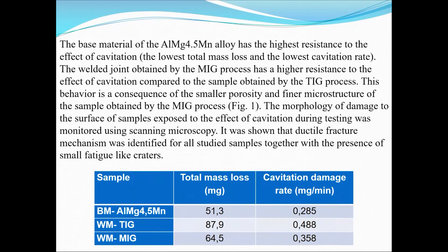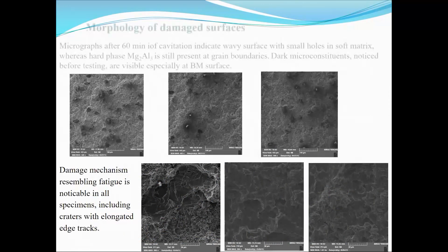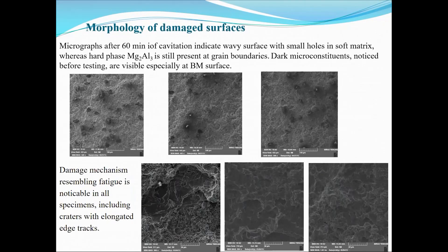Here are these results given as numbers, so you can quantify what you saw on the previous slide. The comparison is the same: base metal is the best, then MIG, and the worst is TIG. The explanation, as already announced, is porosity.